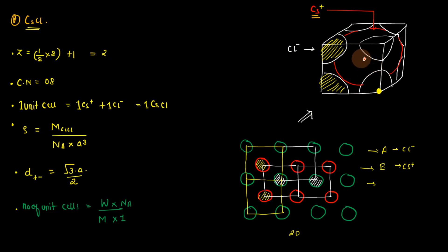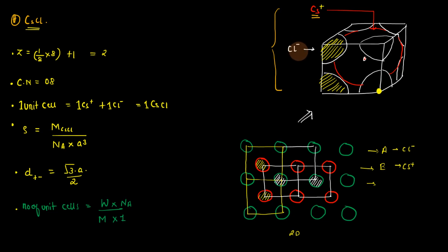One unit cell of cesium chloride looks like a body-centered cube, but it won't be correct to say it is exactly a body-centered cube. You can imagine it as two different types of simple cubes fused together. So one unit cell of cesium chloride — if you consider chlorine atoms present at the corners or lattice points — has chloride ions contributing one-eighth part at each corner.